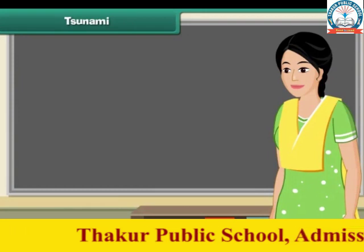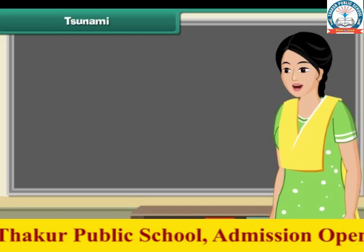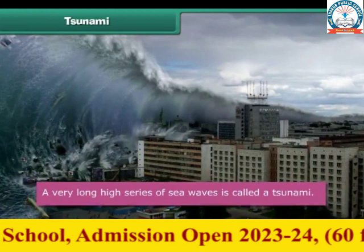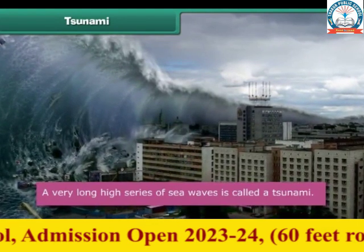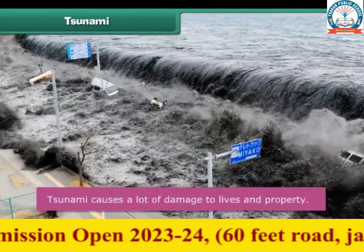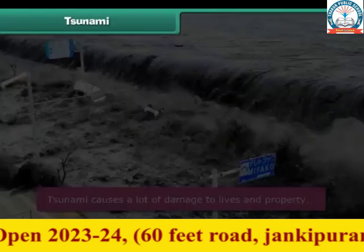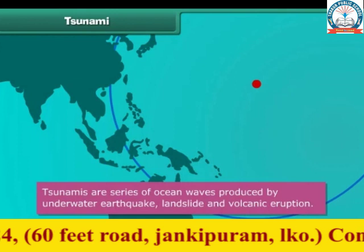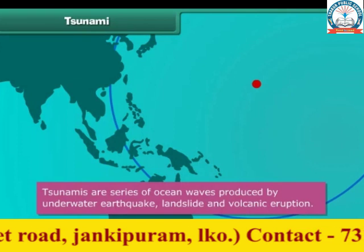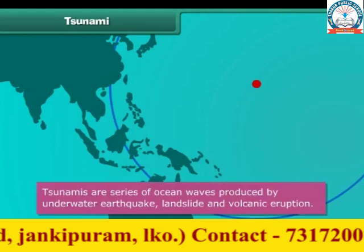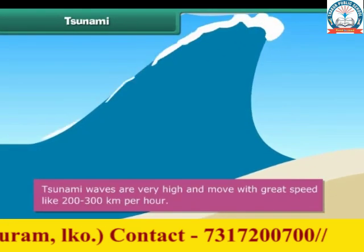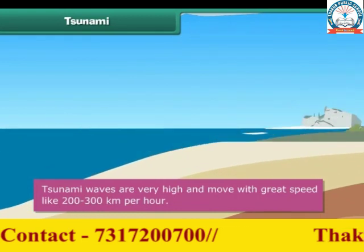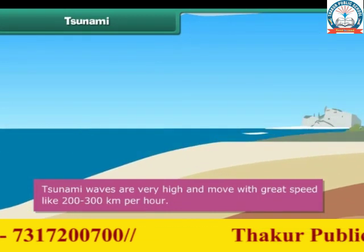You must have heard about tsunami. A very long, high series of sea waves is called a tsunami. It causes a lot of damage to people and property near the sea. Tsunamis are a series of ocean waves produced by underwater earthquakes, landslides, and volcanic eruptions. These waves are 30 meters high and 200 kilometers long, travelling at a speed of 200 to 300 kilometers per hour.